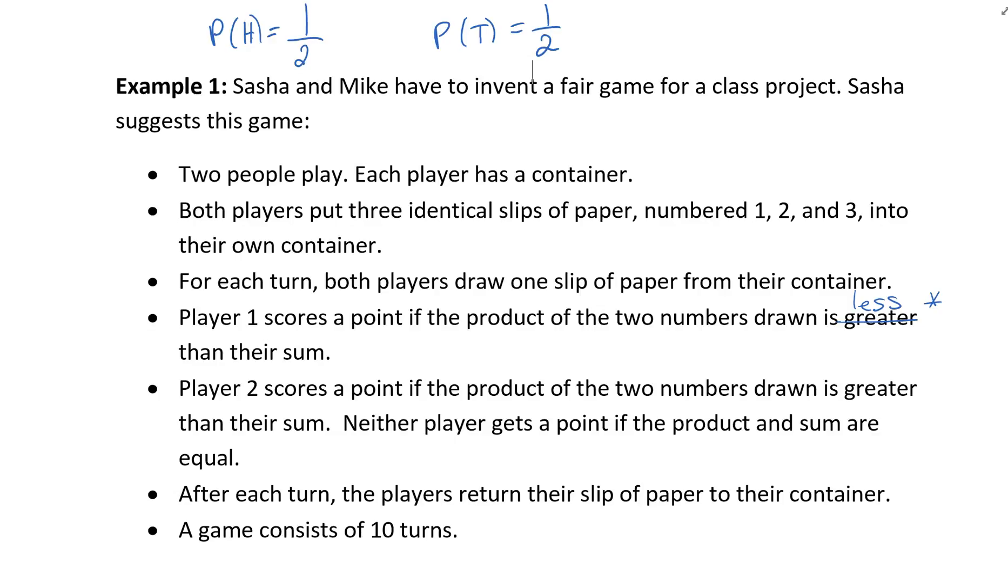For each turn both players draw one slip of paper from their container. Player one scores a point if the product of two numbers drawn is less than their sum. Player two scores a point if the product of their two numbers drawn is greater than their sum. Neither player gets a point if the product and sum are equal. After each turn the players return their slip of paper to their container. A game consists of 10 turns.